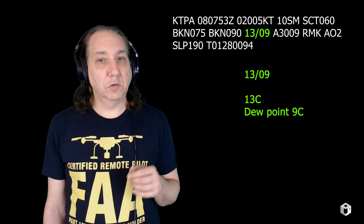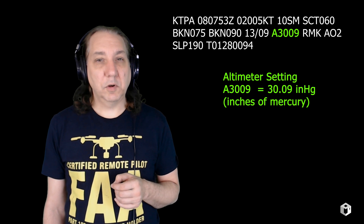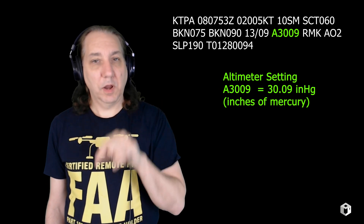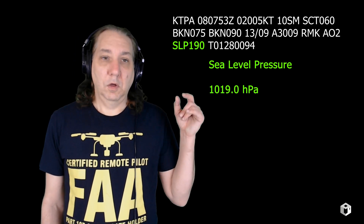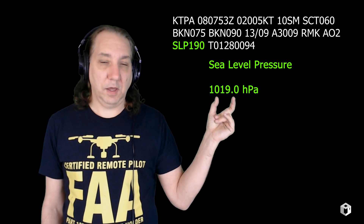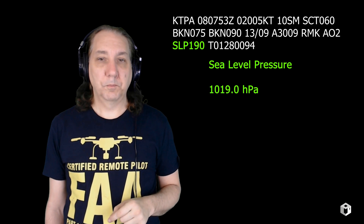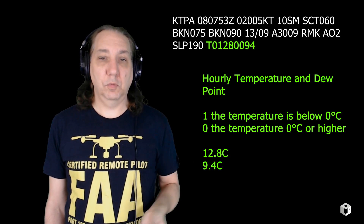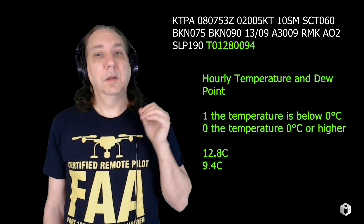Temperature and dew point: 13/09 — 13 degrees centigrade, dew point is 9 degrees. Altimeter setting A3009 — that's 30.09. Remarks: RMK — this is the nightmare of trying to read METAR reports; whenever you see RMK, you'll shake your head. AO2 — precipitation descriptor. SLP 190 — sea level pressure, put a 10 before that: 1019.0. T01280094 — that's the temperature and dew point: 12.8 degrees Celsius and 9.4 degrees Celsius.